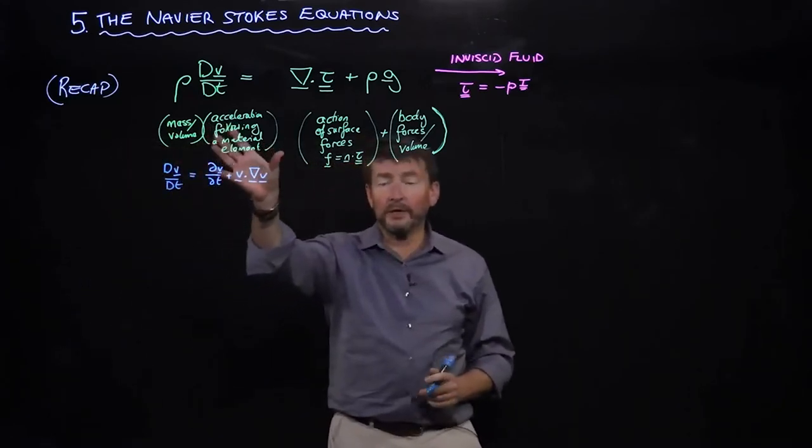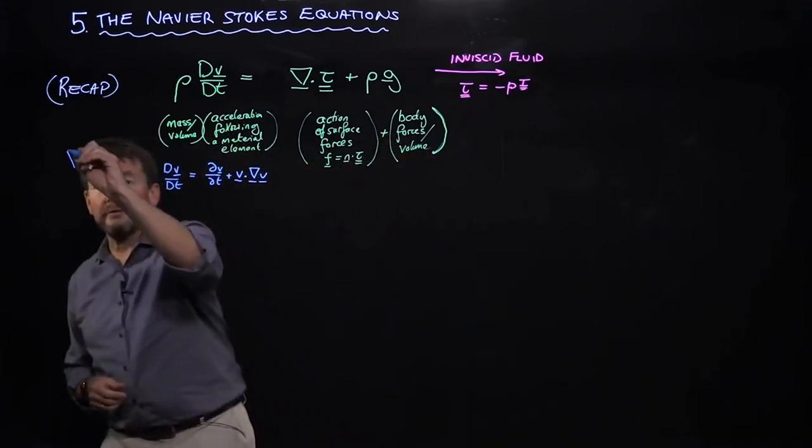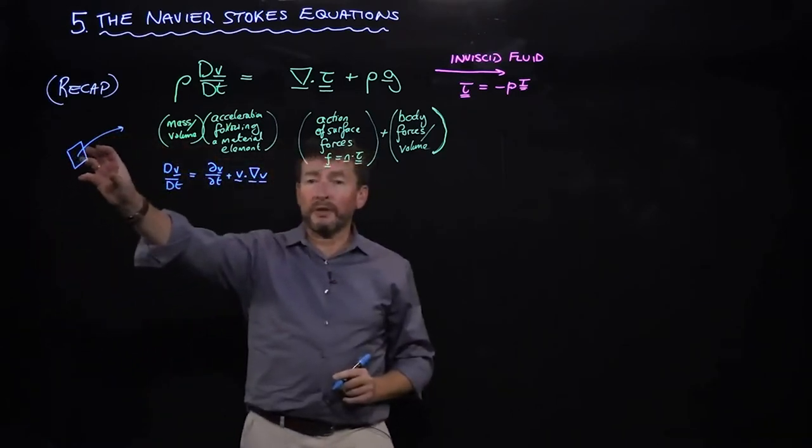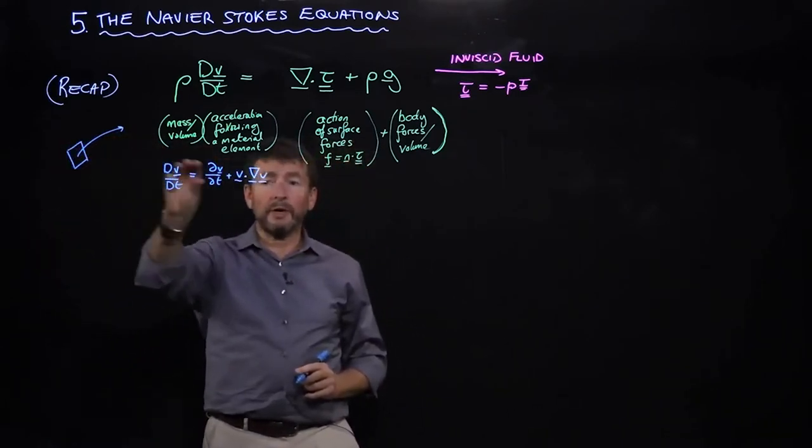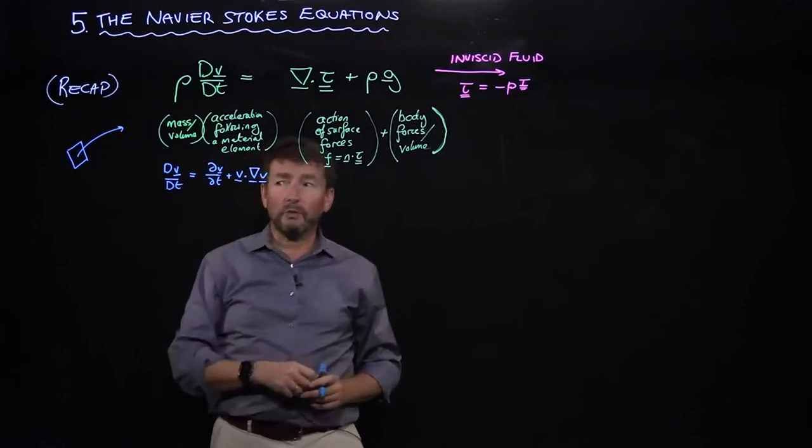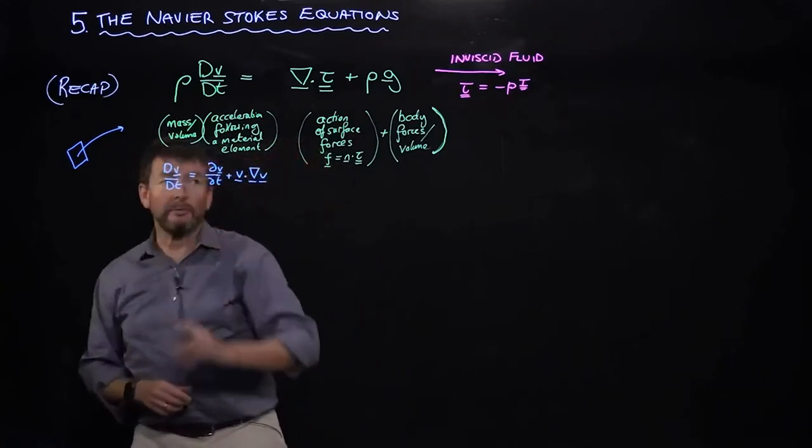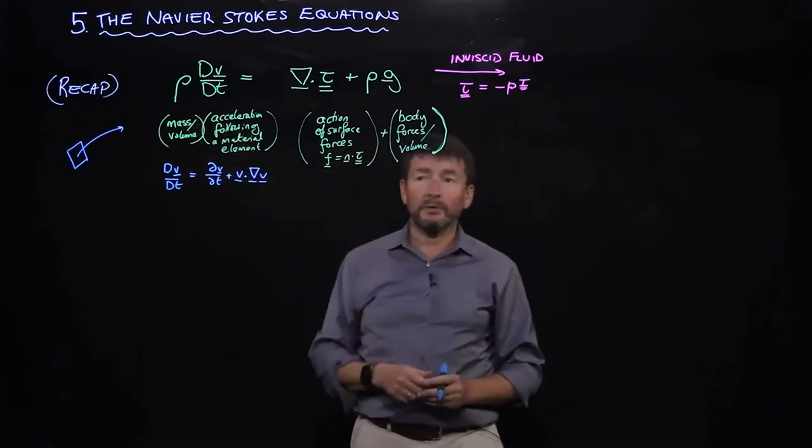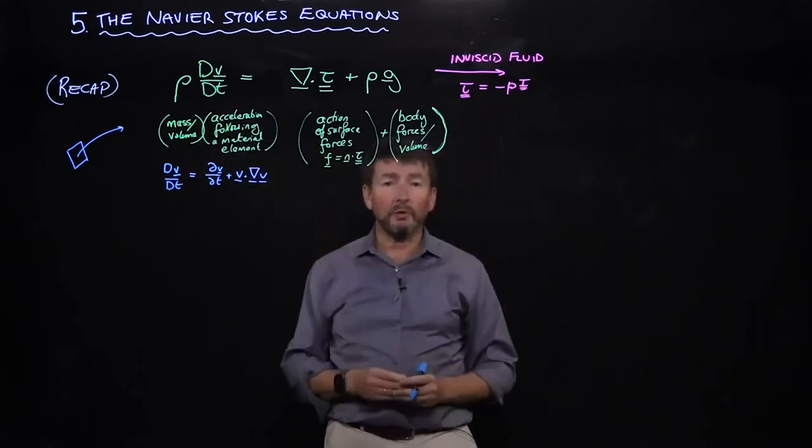What we really mean is the acceleration following a little material element as it flows through space. We follow both changes in velocity at a fixed point in time and space, and then we also follow what happens when I move through space. That's the mass times acceleration part of Newton's second law.